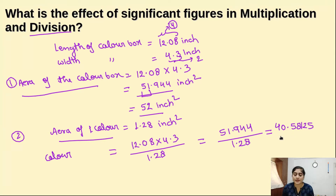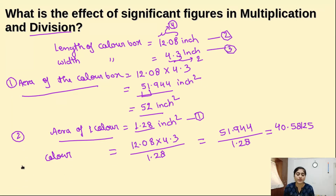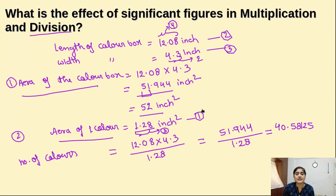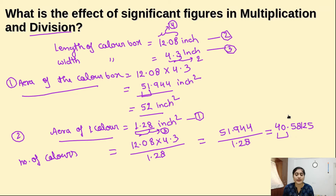Now we have to see how many significant digits to keep. We are using three values: 12.08 has 4 significant digits, 4.3 has 2 significant digits, and 1.28 has 3 significant digits. The least significant digits among these is 2, so we can go up to 2 significant figures. Rounding off 40.58125, the answer is 41 colors in the color box.